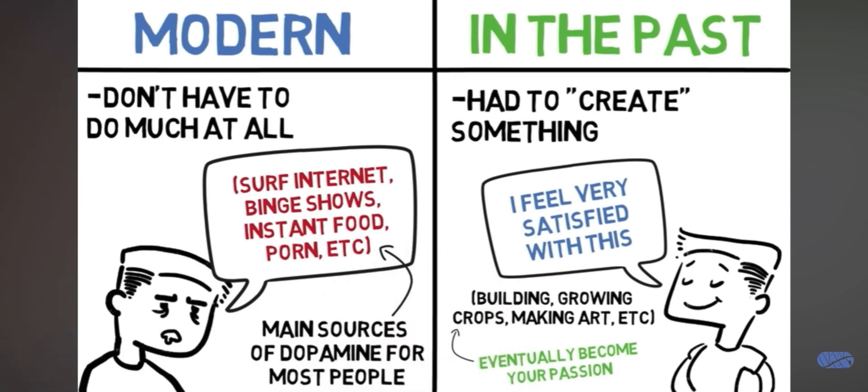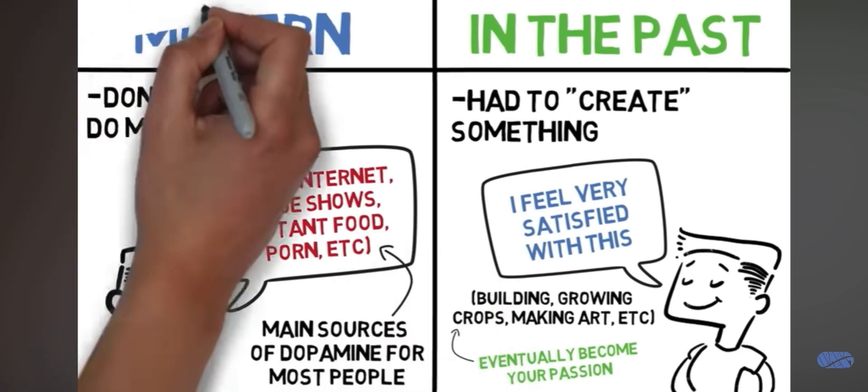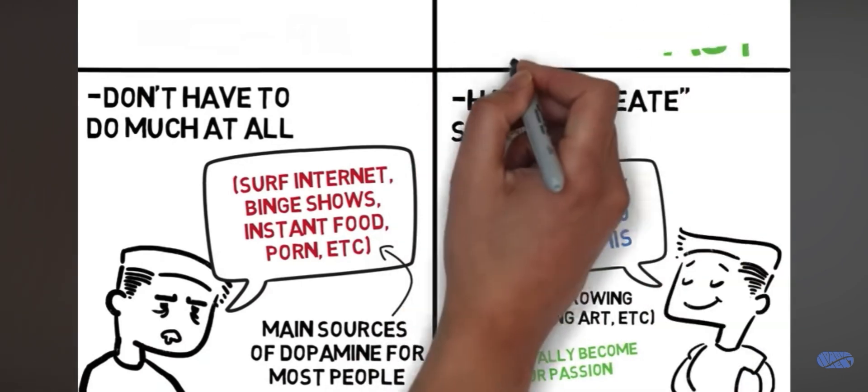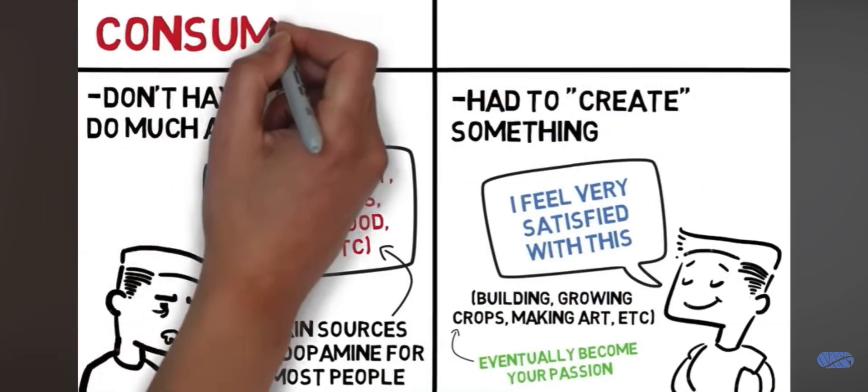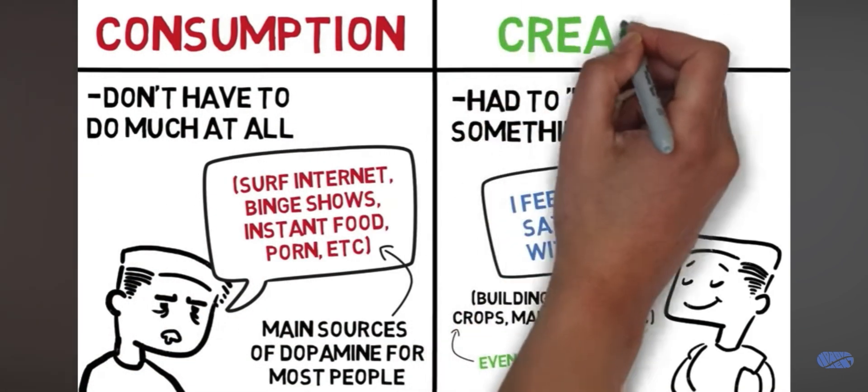Now what's different about these sources of dopamine as compared to the ones we used to get it from? Well, these are forms of consumption. And the ones we used to use are forms of creation. And this is a very important distinction.